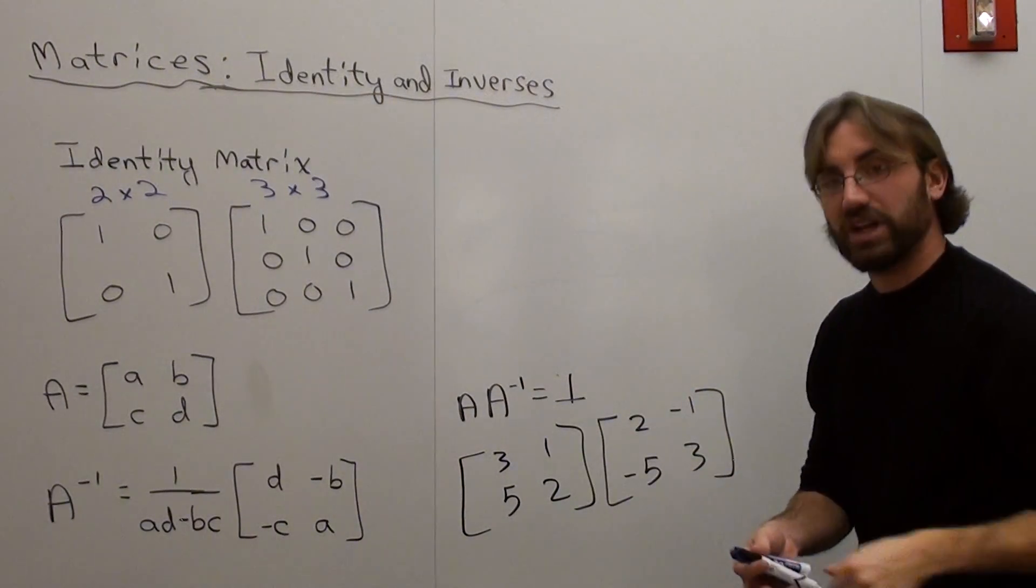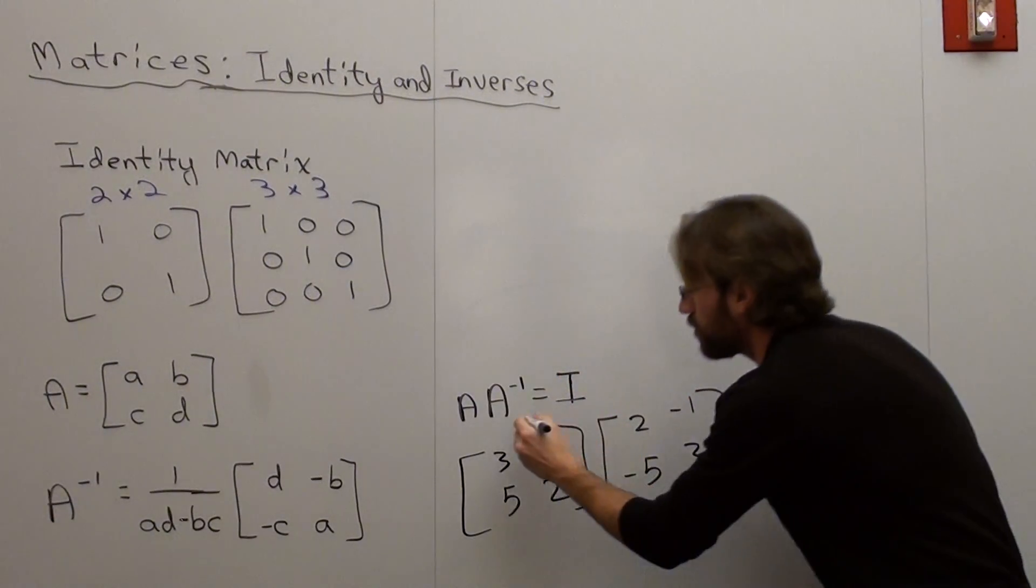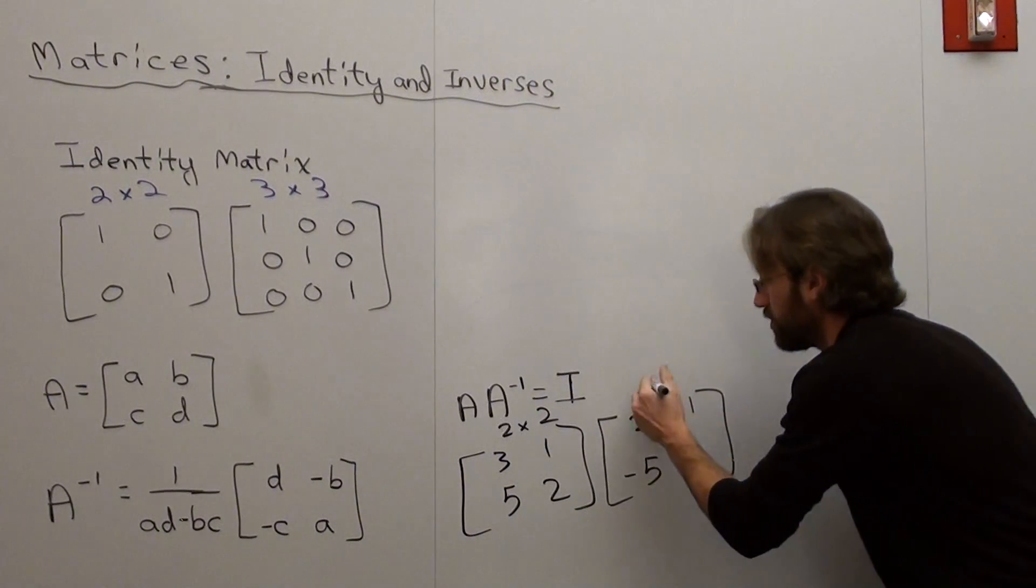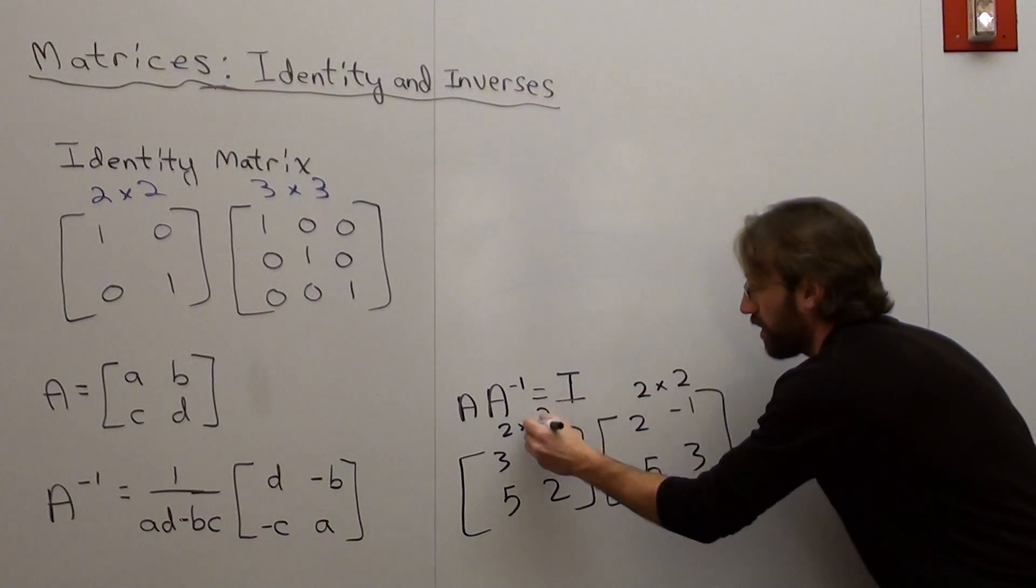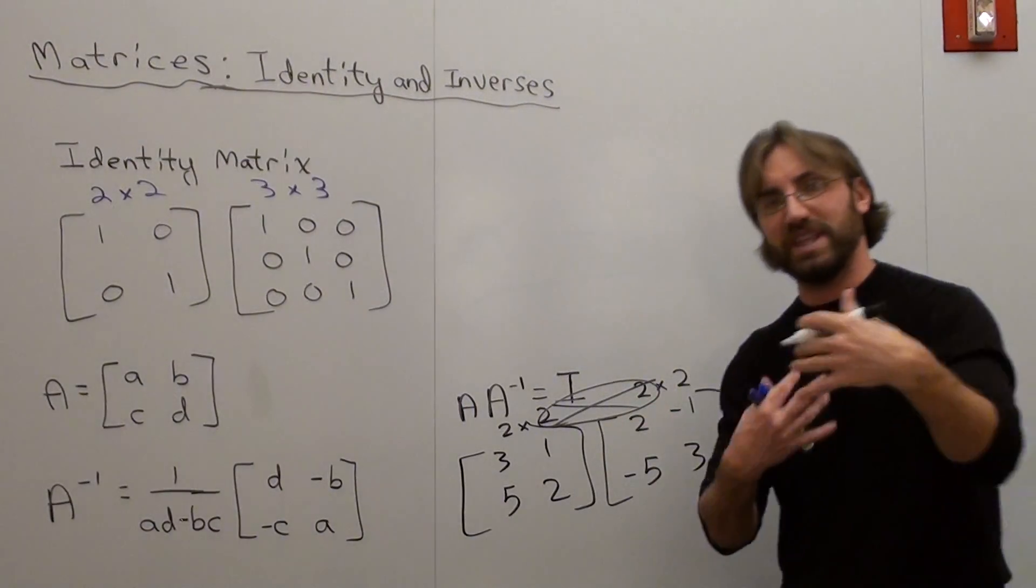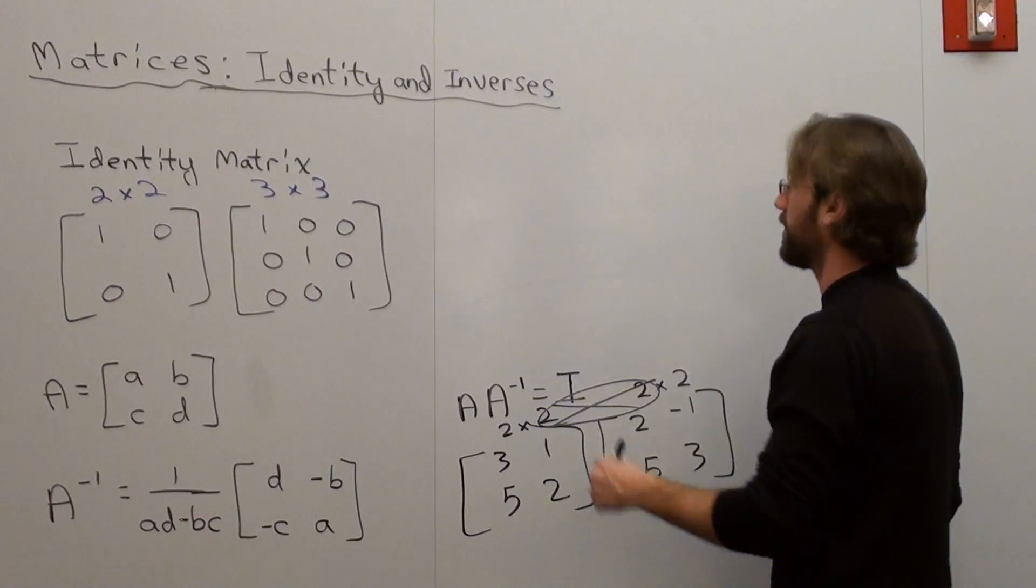Now the first thing that you have to ask yourself when you're multiplying matrices is, can I multiply them? Well, this is a 2 by 2, 2 rows by 2 columns. This is 2 rows by 2 columns. So yes, it does work. 2's cross out, they match. You're going to be left with a 2 by 2 matrix. But that's what you have to be left with anyways in order to form an identity.